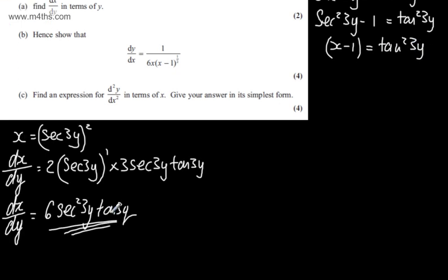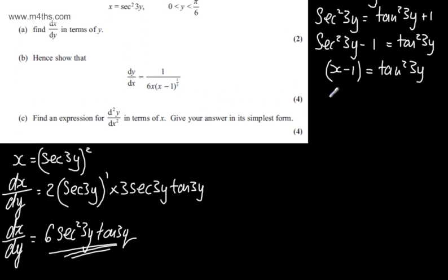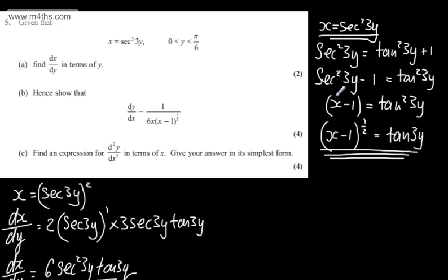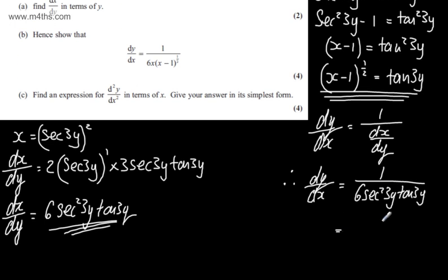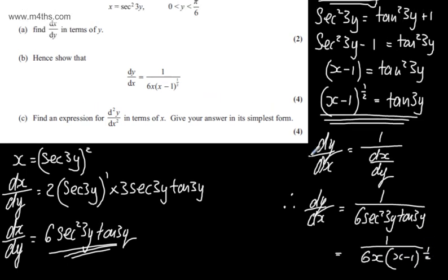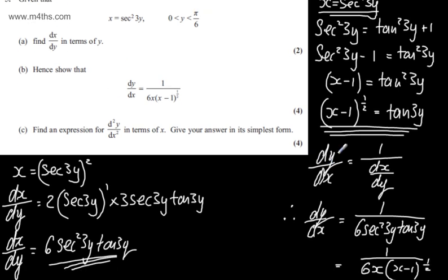We need an expression for tan(3y). Since sec squared(3y) is x, we can say x minus 1 to the power of one half equals tan(3y). Now dy/dx equals 1 over dx/dy, so dy/dx is 1 over 6sec squared(3y)tan(3y). Making the substitutions, this equals 1 over 6x times (x minus 1) to the half — as required. Using trig identities and dy/dx = 1/(dx/dy), we sub those values in to get the four marks.